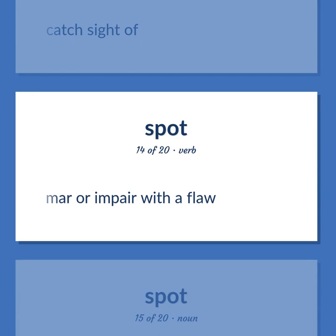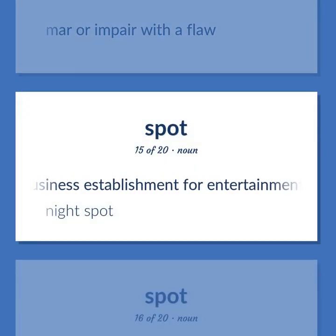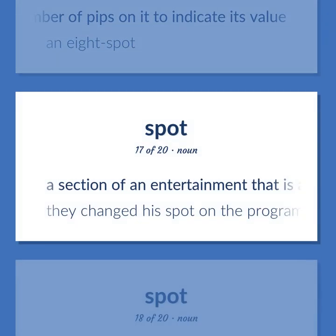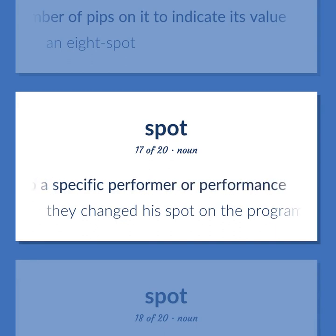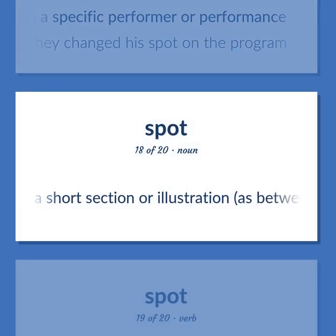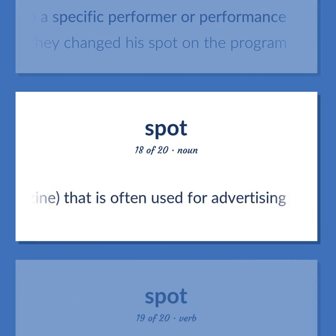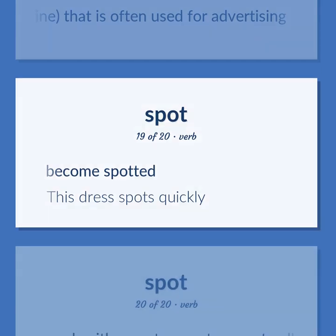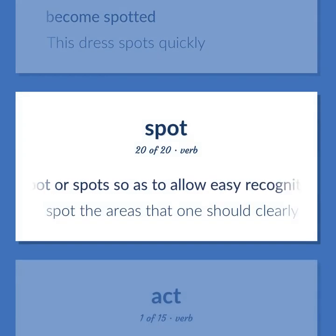Mar or impair with a flaw. A business establishment for entertainment — night spot. A playing card with a specified number of pips on it to indicate its value — an eight spot. A section of an entertainment assigned to a specific performer or performance. They changed his spot on the program. A short section or illustration, as between radio or TV programs or in a magazine, often used for advertising. Become spotted — this dress spots quickly. Mark with a spot or spots so as to allow easy recognition. Spot the areas that one should clearly identify.